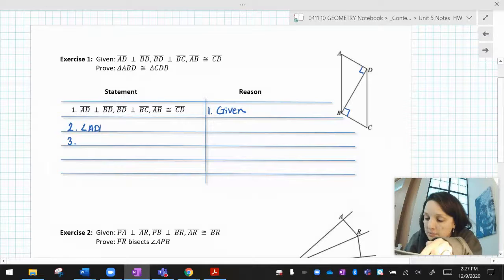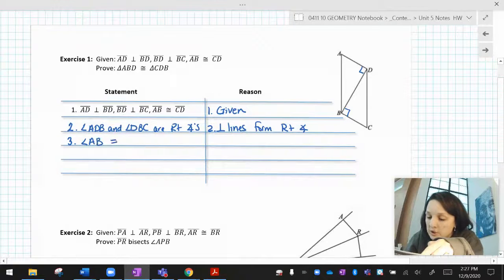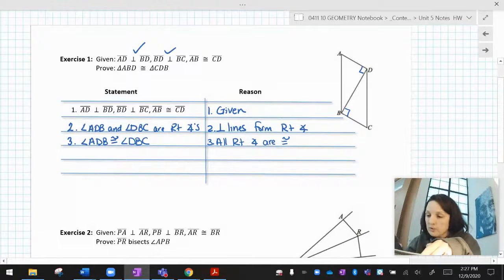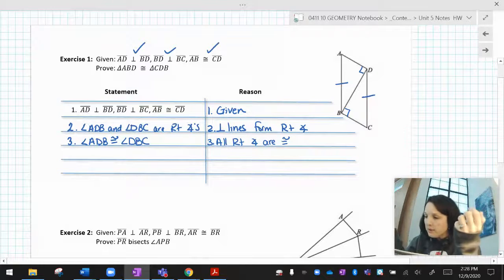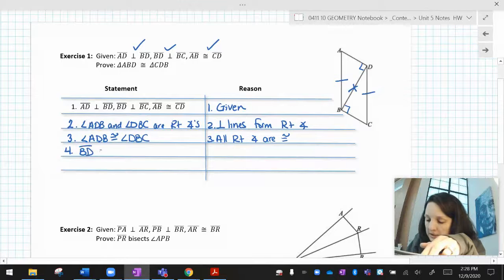So if I'm going to identify these right angles, that means angle ADB and angle DBC are right angles. And that's because perpendicular lines form right angles. And then I know that ADB is congruent to DBC because all right angles are congruent. And then they told me that AB equals CD. I've exhausted my givens. I'm going to look at the picture. And you know what? The picture has a shared line. BD is shared. So BD is congruent to BD by the reflexive property.